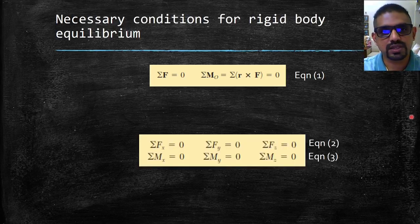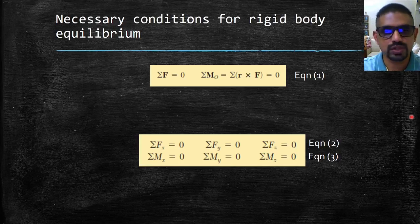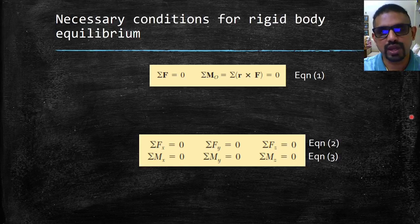Sigma Fx, sigma Fy, and sigma Fz equal to zero; and sigma Mx, sigma My, and sigma Mz equal to zero.